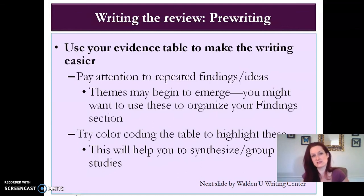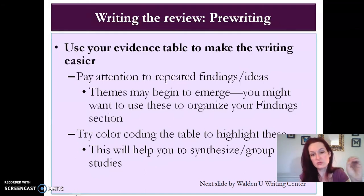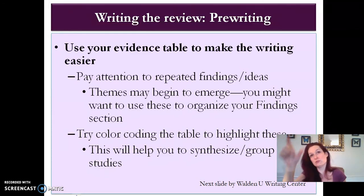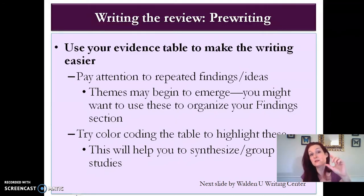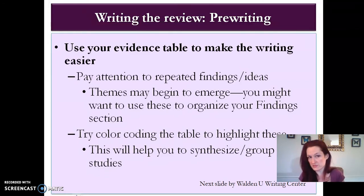The Cochrane Library and some other organizations have grading scales for evidence, and you can include a column for that or leave it off. But definitely include methods, results, implications, and limitations — a column for each for every study you look at. If you do a good enough job with that, when you get to your findings and discussion sections, you can just look down the columns. When you look down the results column, you'll start to see themes emerge — studies with similar findings and studies with contradictory findings. You'll want to group similar findings together and highlight any contradictions, and that's what we mean by synthesis.